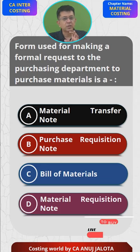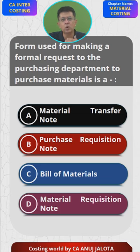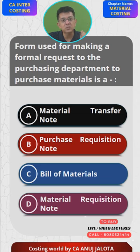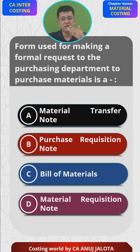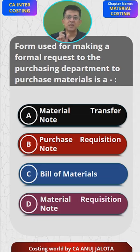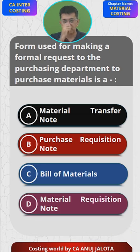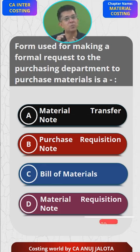Option D — Material Requisition Note: the production department, whenever it is going to produce goods, requires raw materials. Raw materials are stored in the storehouse or warehouse. So the production department gives a request to the stores department via a Material Requisition Note, asking them to please issue the required materials. That request from production department to stores department is the Material Requisition Note — so option D is not the answer here.